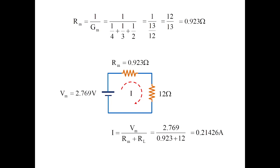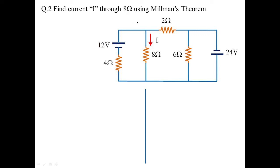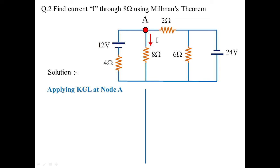This is how we solve a problem using Millman's theorem. For a better understanding, let us go with another example where we need to find the current I flowing in 8 ohms using Millman's theorem. First, applying node analysis: I apply node A and use KCL. We have two nodes here — one node and a reference node treated as zero.